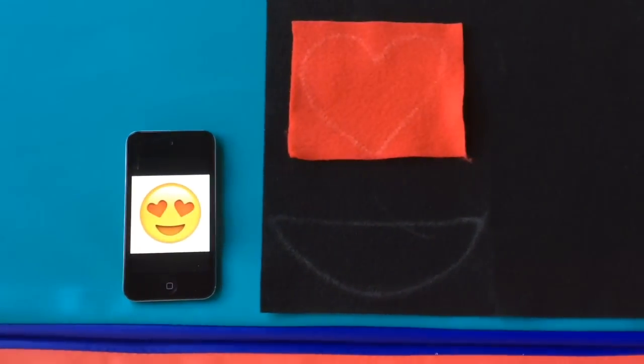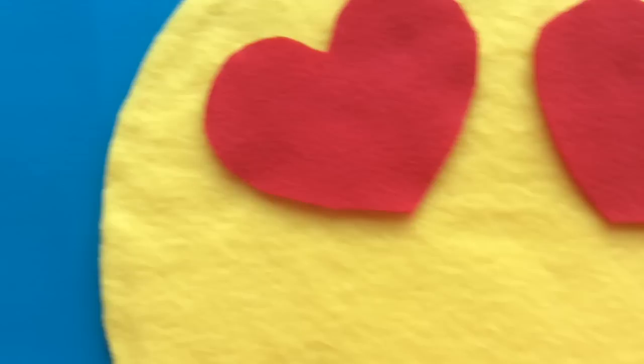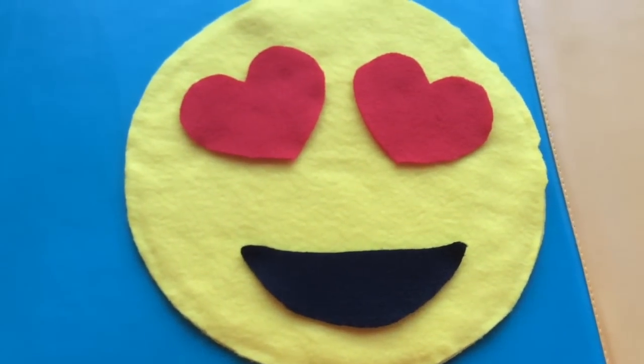So when I drew it, that's what it looked like, and I used the chalk. So right now I had the mouth, one heart eye, and the other heart eye, and it all looked like this, but do not hot glue it on.